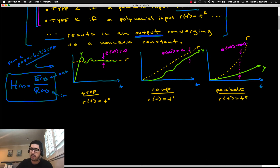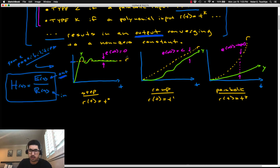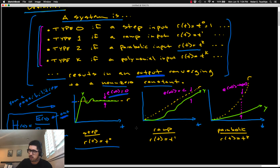Even though the measured output Y converges to a non-zero constant, the system type cannot be determined from this input-output data. That's because the output of the system we're considering here is the error. If the output tracks the reference perfectly, the error itself converges to zero — and zero is not a non-zero constant. So the input-output data for this step reference does not subscribe to any one of the scenarios in the definition.